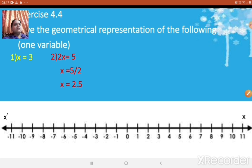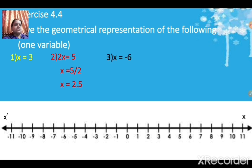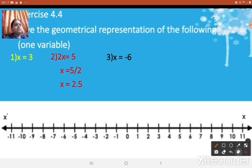The next one is x = -6. It is not compulsory that you will always get a positive variable value — it may come as negative, as a fraction, or as a decimal. So here x = -6. How to represent it geometrically? You can see that x = -6 is here on the number line. Just put a circle to show that point and write the equation as x = -6.